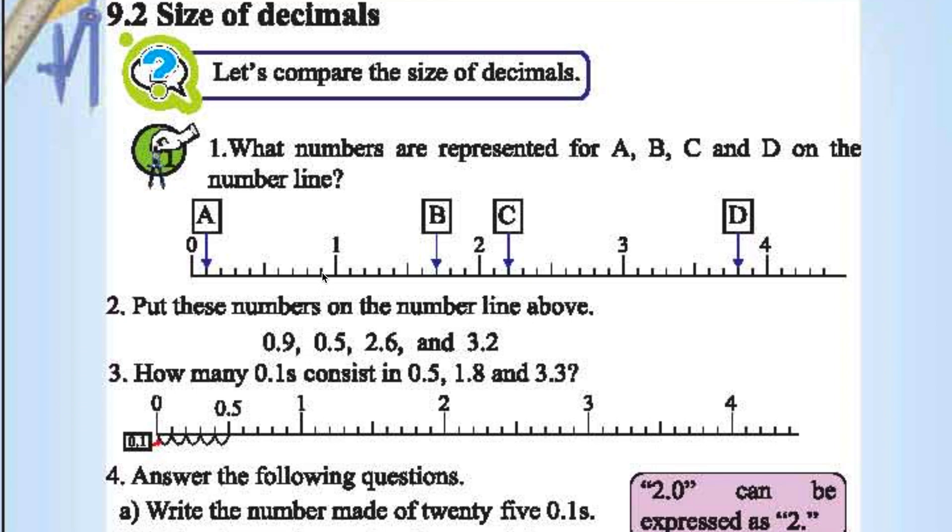Now put these numbers on the number line above. 0.9 means here. 0.5 here. 2.6 here. 3.2. Second division after 3. So 3.2 here.